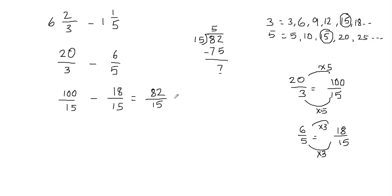Now we write our mixed fraction. In a mixed fraction you have the whole number and the fractional part. The quotient becomes the whole number, so 5 is my whole number. Then the remainder goes in the fraction's numerator and the divisor goes in the fraction's denominator. So my final answer is 5 and 7 over 15.